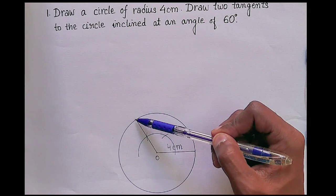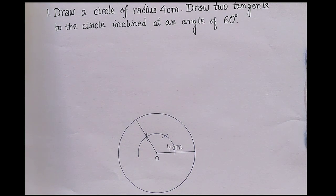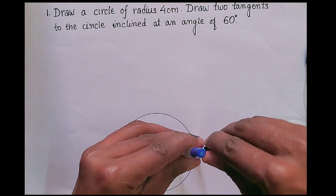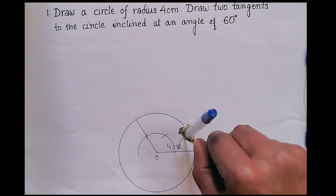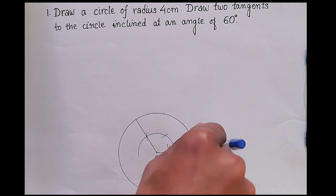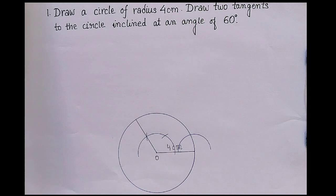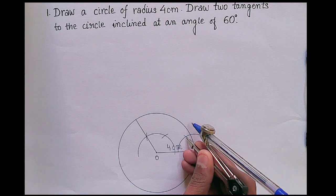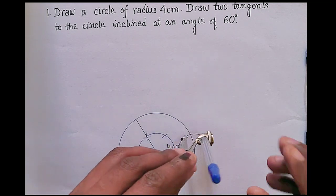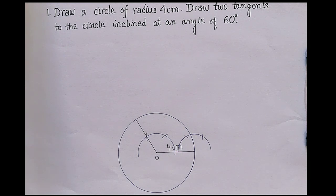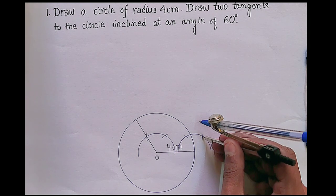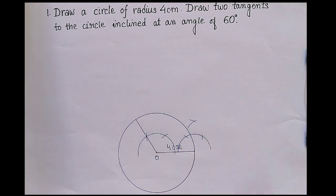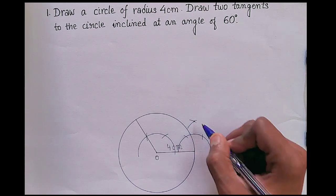Now we have to draw two tangents — one tangent from here and one tangent from here using the compass. Again we will draw a semicircle. From here it will be 60, then from here it will be 120. Then draw 90 degrees. Join this point and this point nicely.